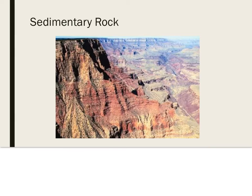Eventually the upper layers put pressure on the lower layers, causing sediments to pack closer together in a process called compaction. Through the process of cementation, minerals from groundwater form between the sediment grains, connecting the grains together to form rock. The rocks formed from deposition, compaction, and cementation of sediment are sedimentary rocks, which often occur in distinct layers and sometimes contain fossils.